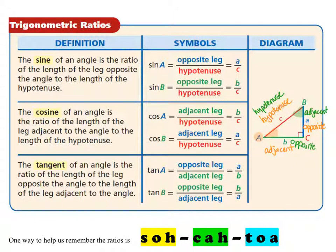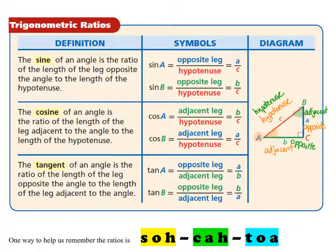Let's talk about these trigonometric ratios. The one called sine — S-I-N-E — of an angle is the ratio of the length of the leg opposite the angle to the length of the hypotenuse. So the sine of angle A is going to be side A, which is the opposite, over the hypotenuse, side C. The sine of angle B is going to be the opposite, side B, over the hypotenuse, side C. That's the sine.